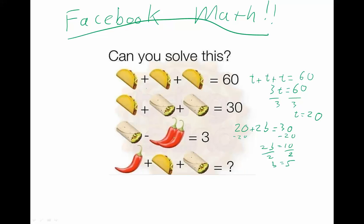Going on to our next equation, we can replace the burrito with 5. And notice that there's 2 peppers here. This is where they try to trick you, because this is pepper, pepper. So we need to call this 2p equals 3.